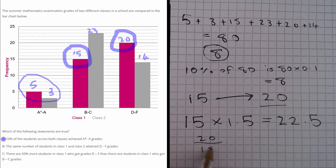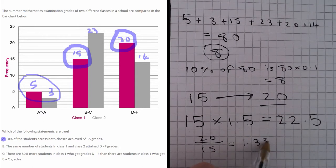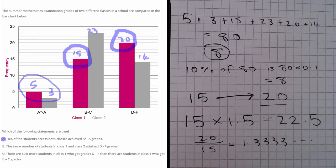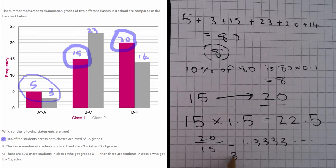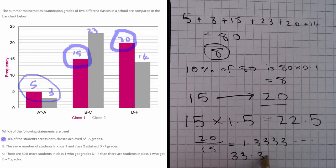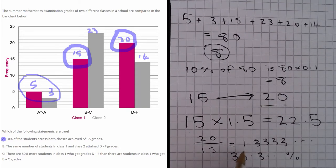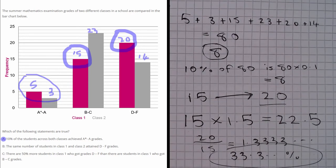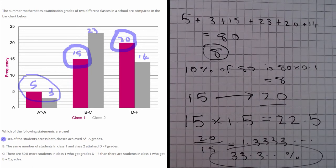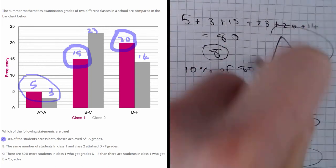So we can see that actually there's been a 33.3 recurring percent percentage increase or it's increased by a third. So of course the answer to this question is A only.